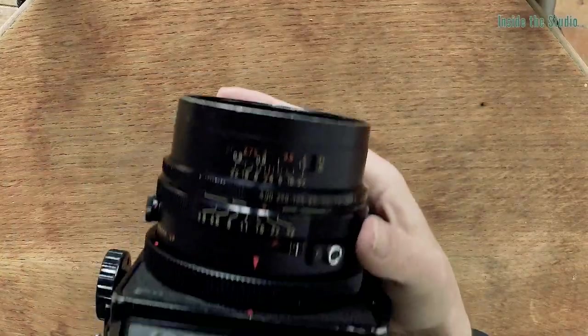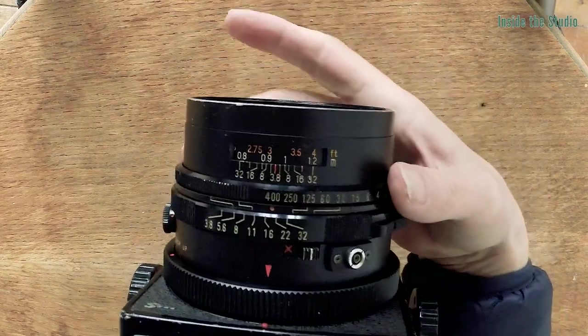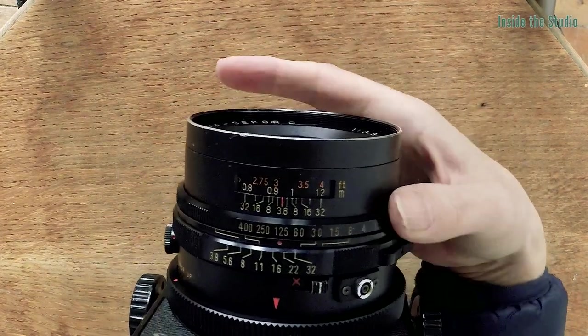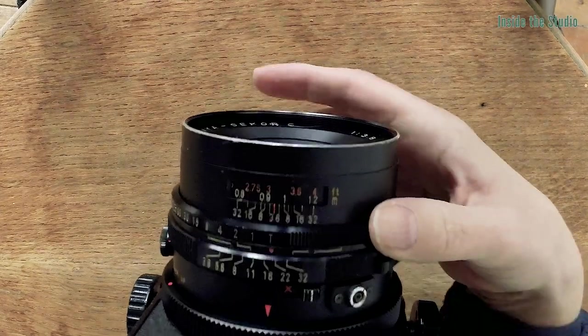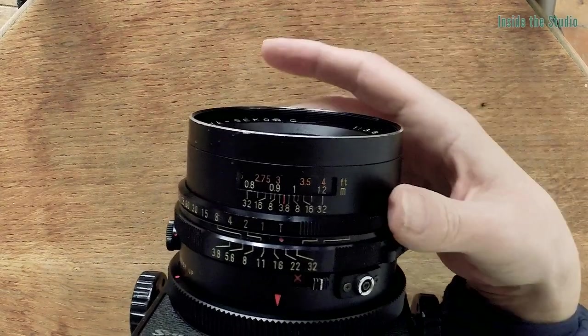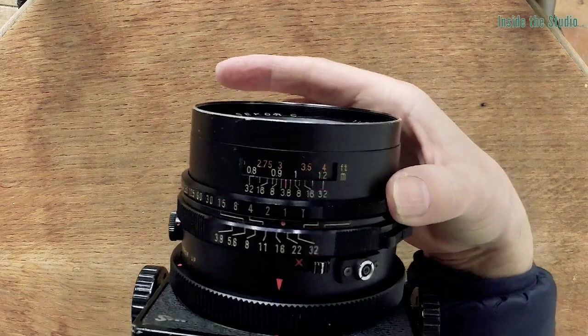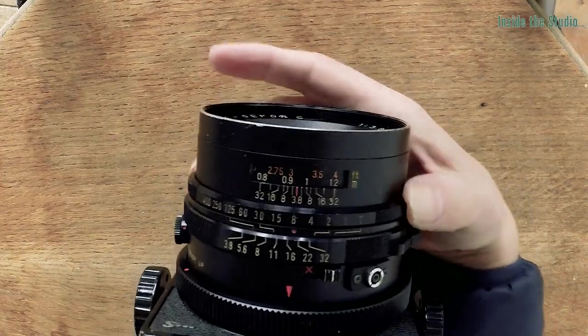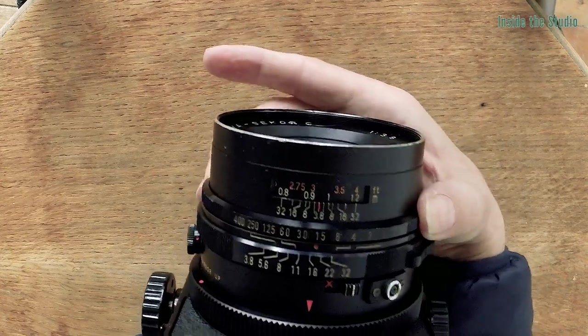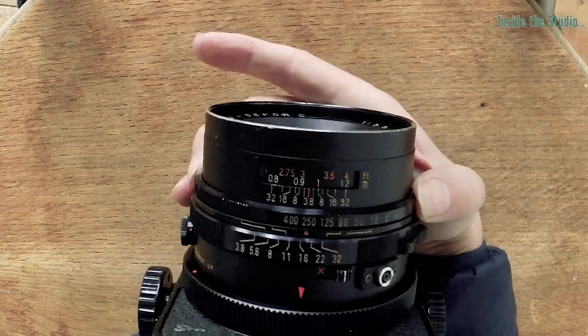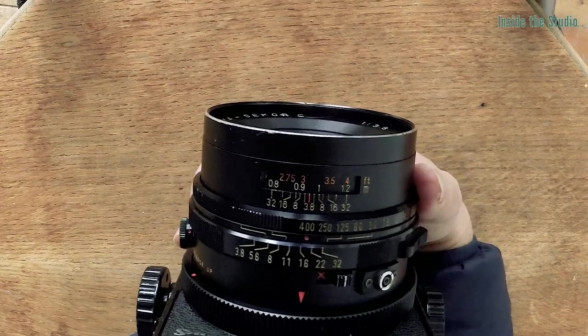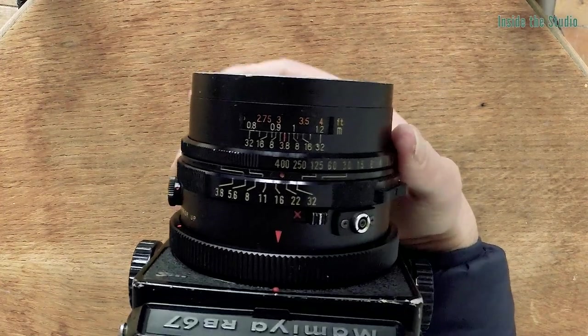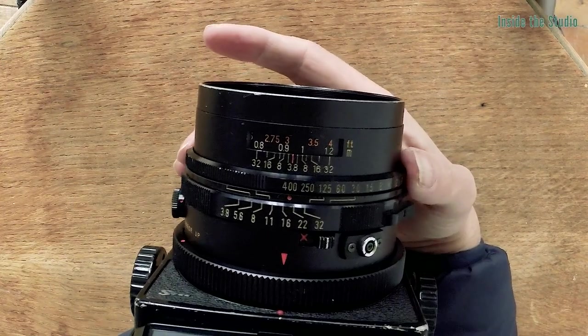On the top here you have your shutter speeds going down from T, which is the same as bulb: one second, half a second, quarter of a second, eighth of a second, 15th, 30th, 60th, 125th, 250th, 400th of a second. That's the fastest shutter speed that there is, but you aren't going to need a faster shutter speed than this.